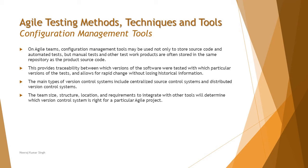In agile especially, documentation may be frequently revised, and there isn't enough time for hectic manual tracking. Configuration management tools can store not only source code but also automated tests, manual tests, and other test work products. Requirements and code can both be updated over time due to defects or requirement changes, and this provides traceability between which version of the software was tested with which version of the tests.